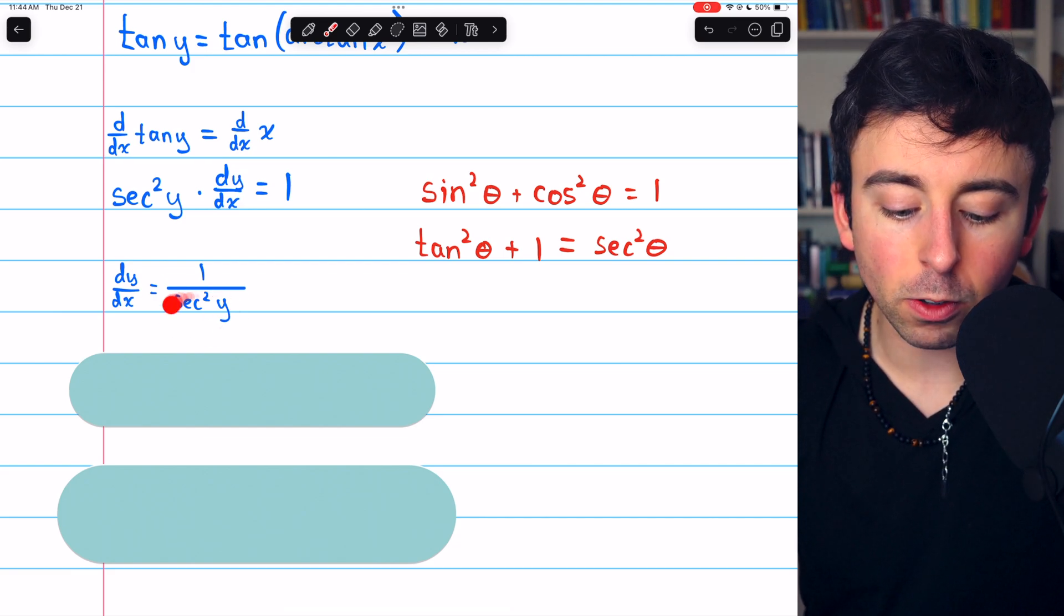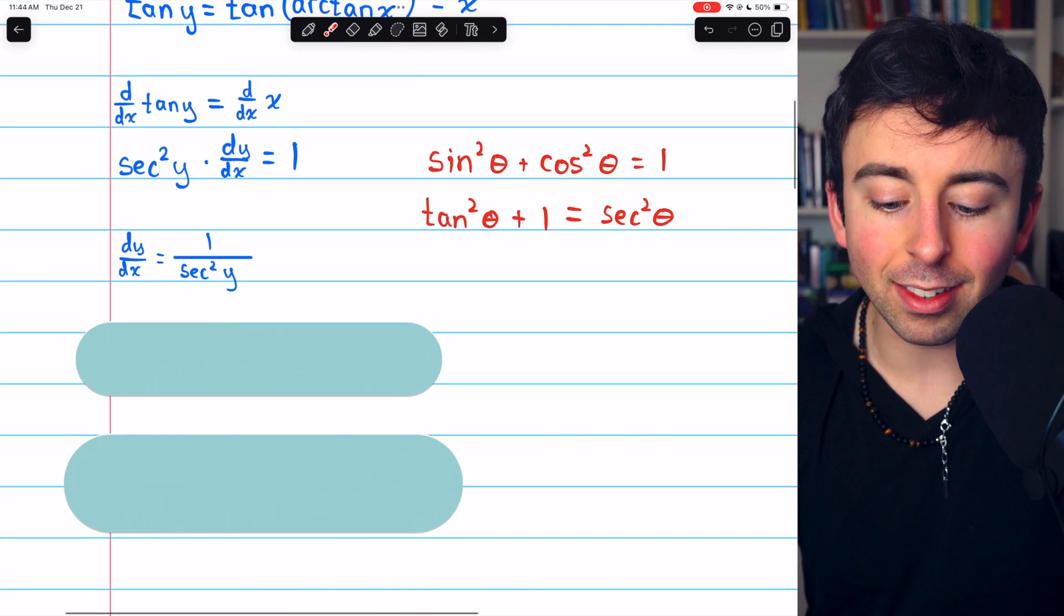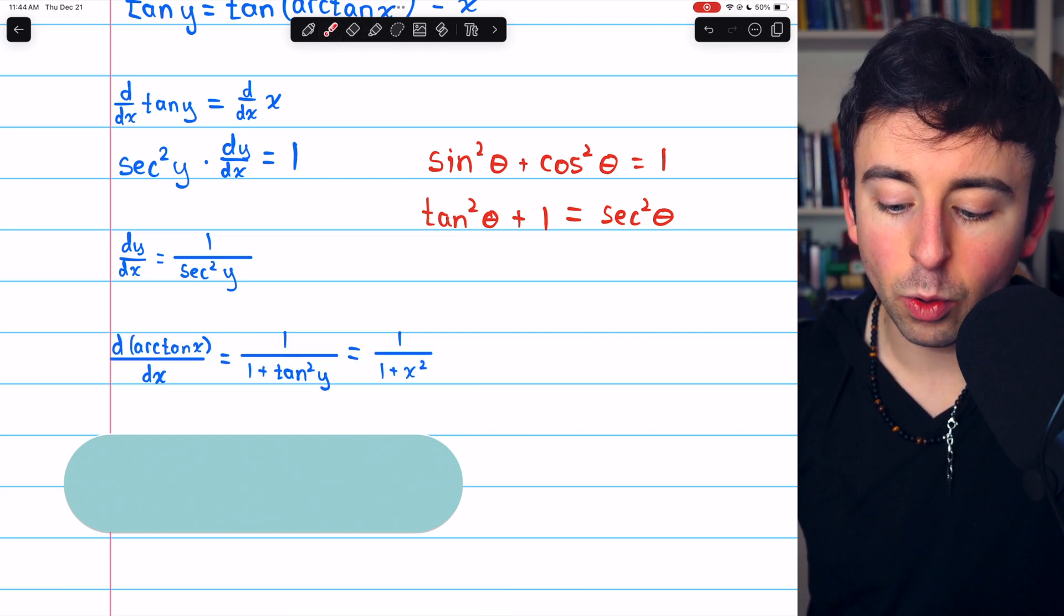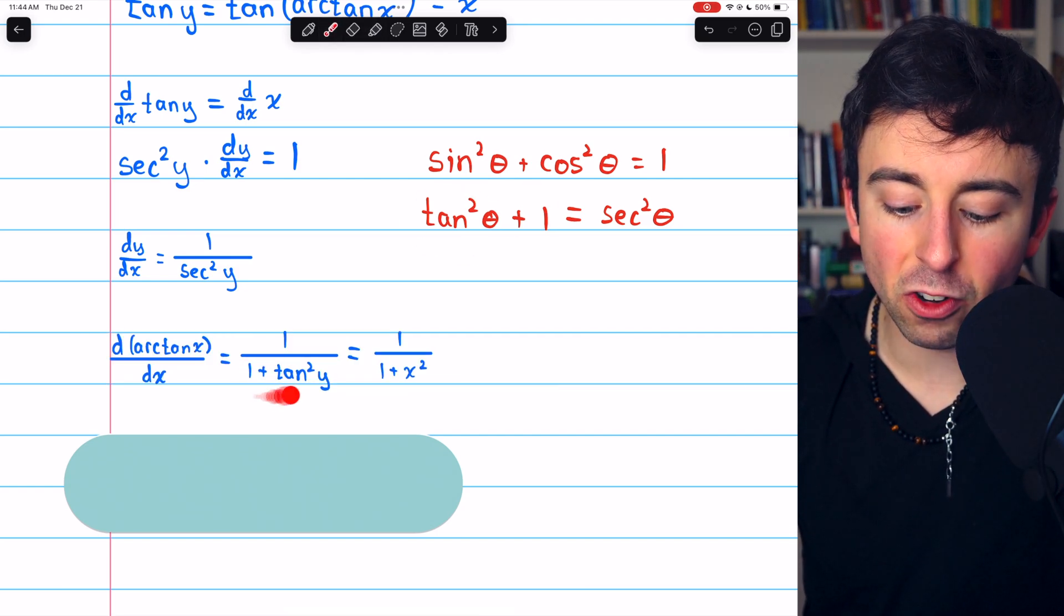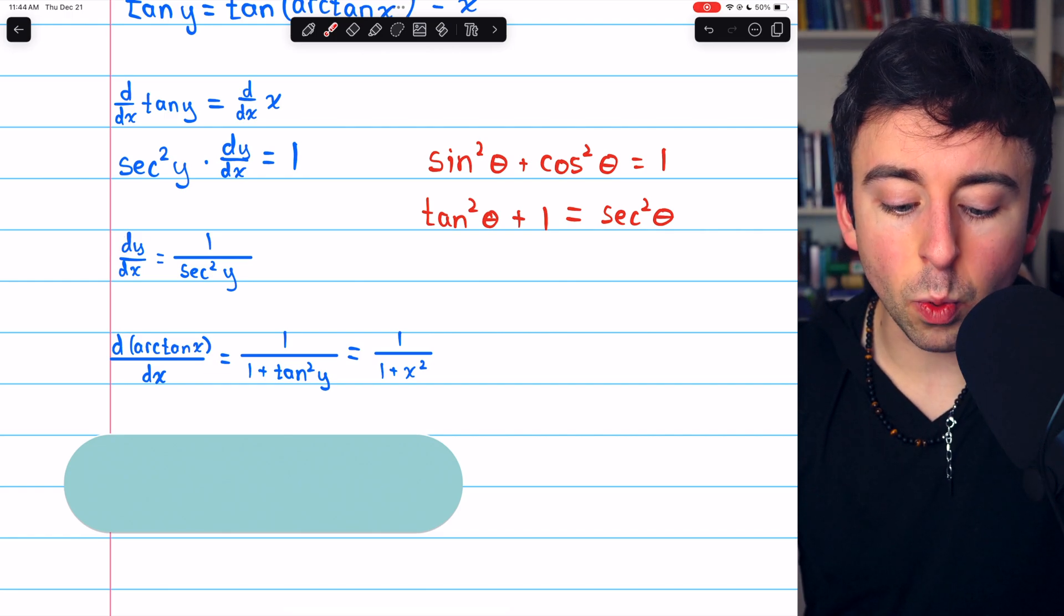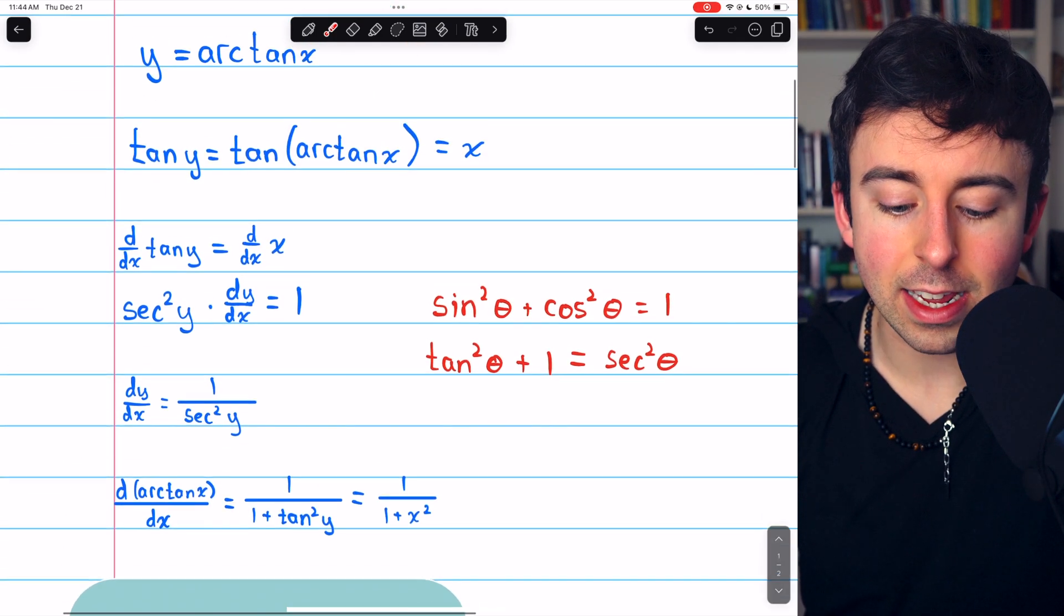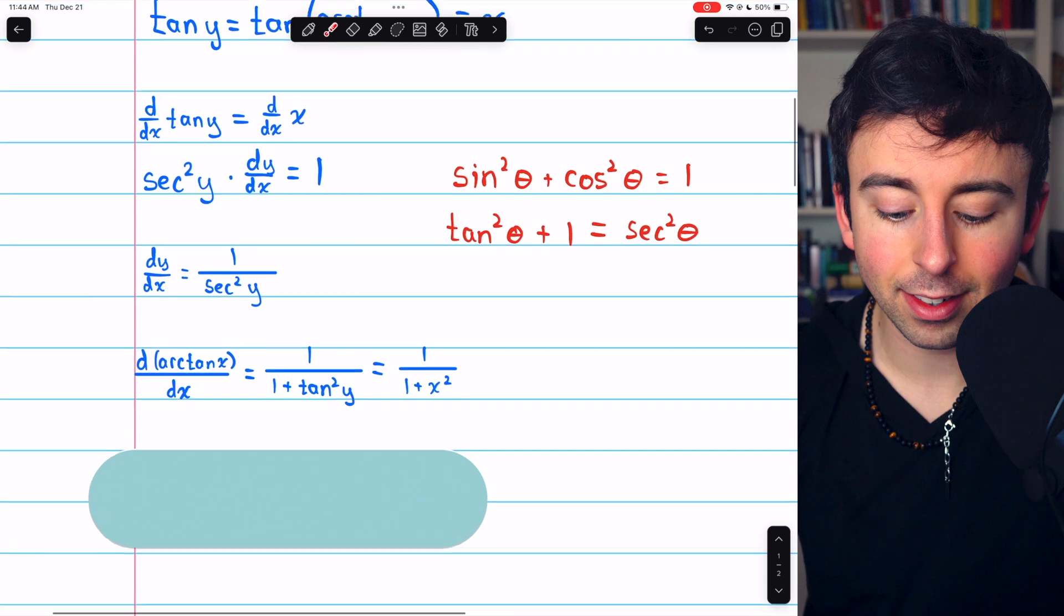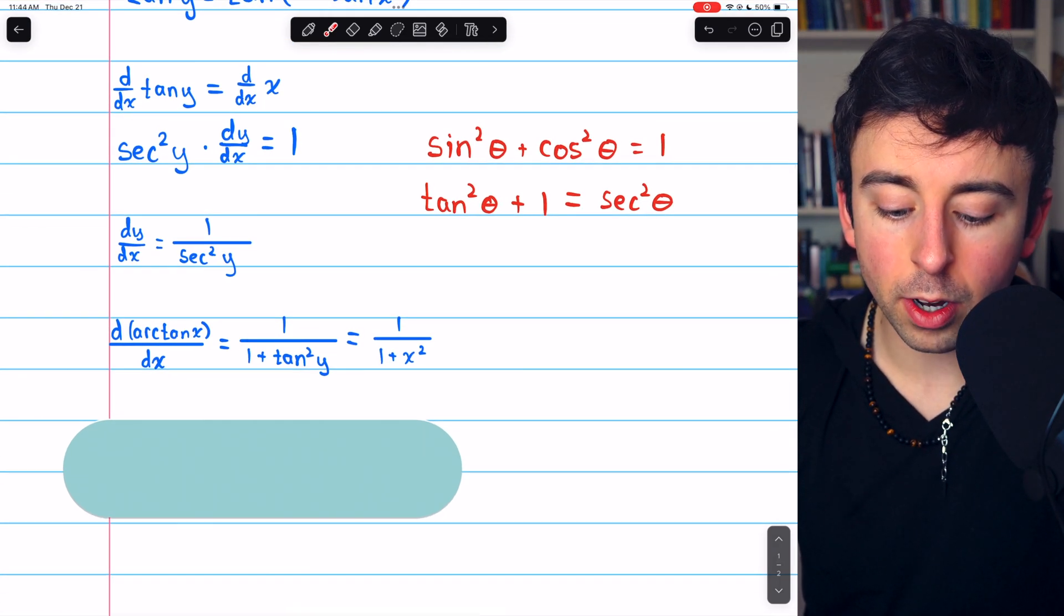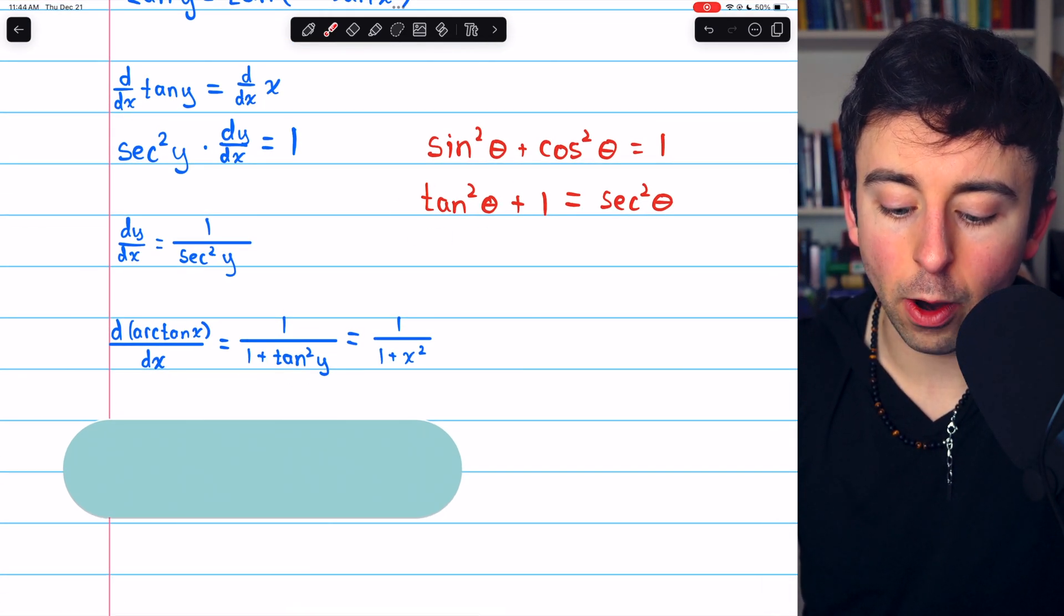we have tangent squared plus 1 equals secant squared. And our denominator over here in our equation is secant squared. So we can replace that with 1 plus tangent squared. Thus, we have dy/dx, which is d(arctan x)/dx equals 1 over 1 plus tangent squared y.